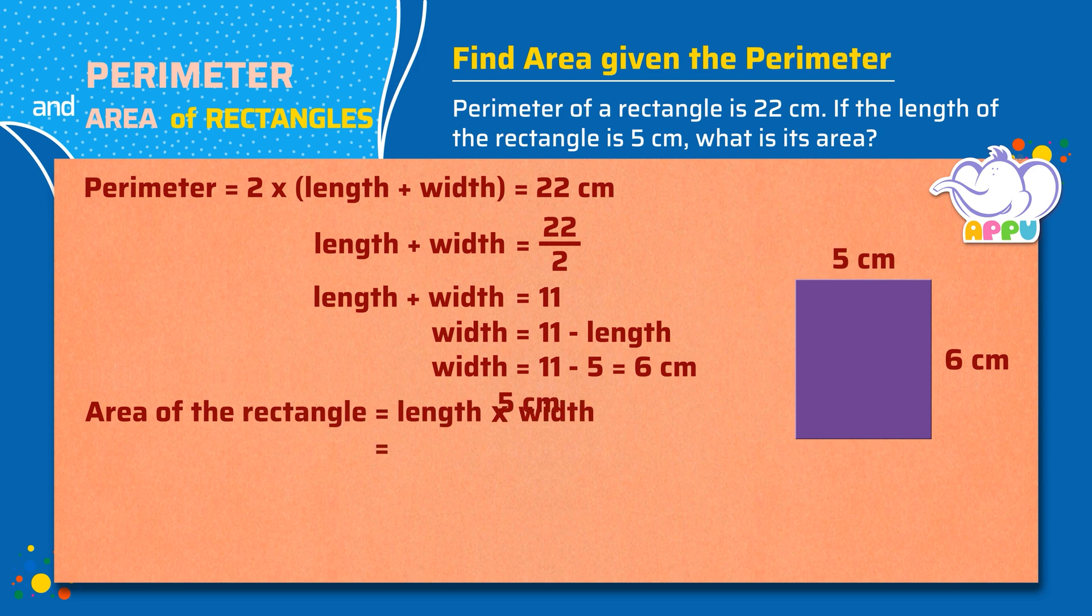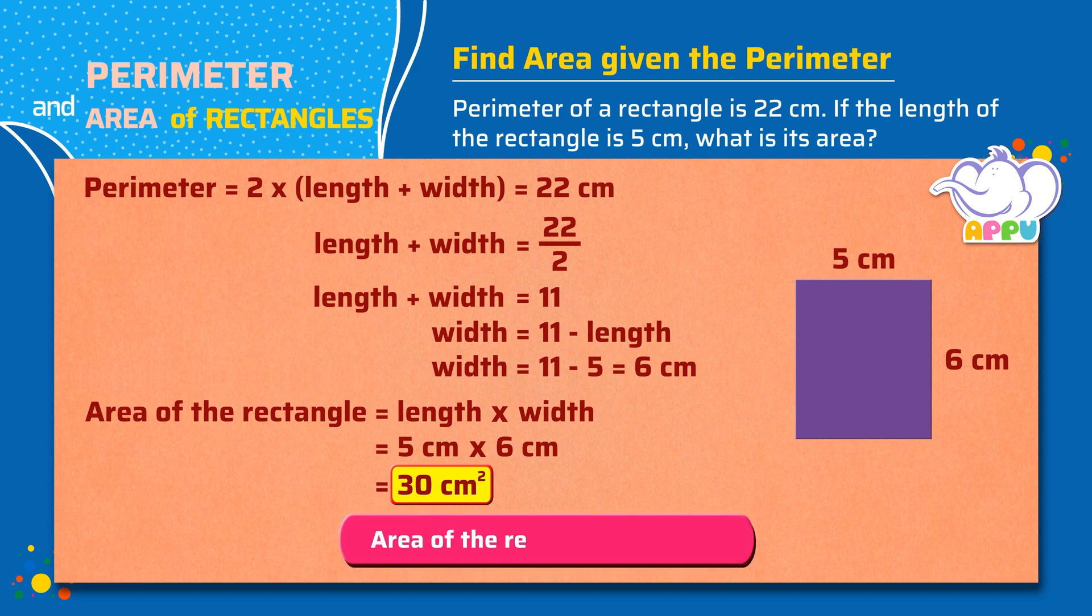Area is 5 centimeters times 6 centimeters, which equals 30 square centimeters. So the area of the rectangle is 30 square centimeters.